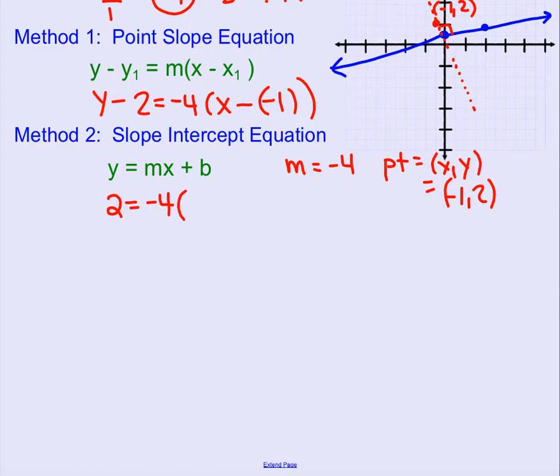Negative 4, my x is negative 1, and then plus b. So go ahead and solve this for b.